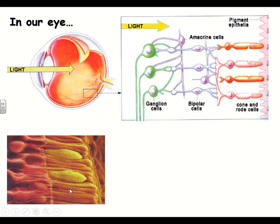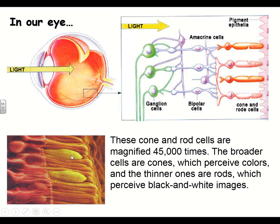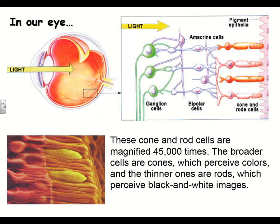This is a magnified picture of cones and rods — magnified 45,000 times larger than normal. The broader yellowish ones are our cone cells that see color, and the thinner ones are the rods, of which there are many more. That's why we can see things even with just a little light and shadows. Nocturnal animals like owls don't have very many cones — they need to perceive that black and white image and distinguish things in low light.